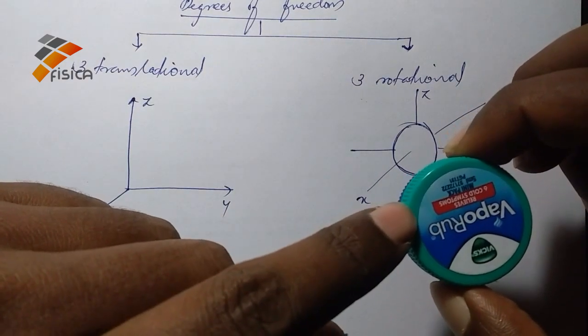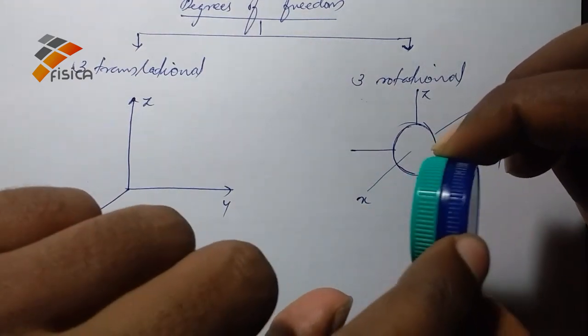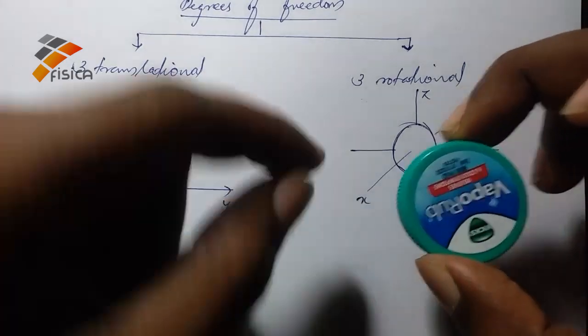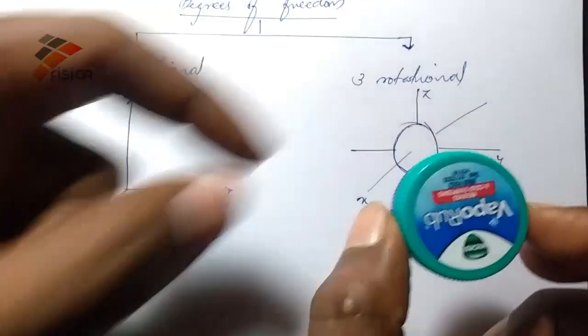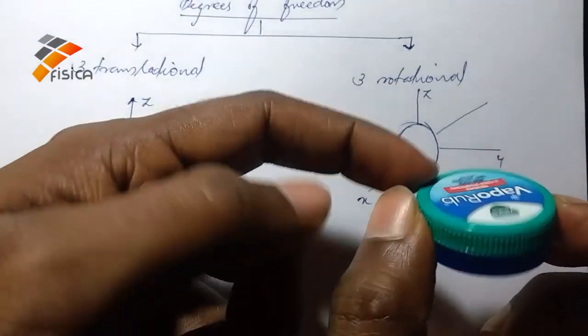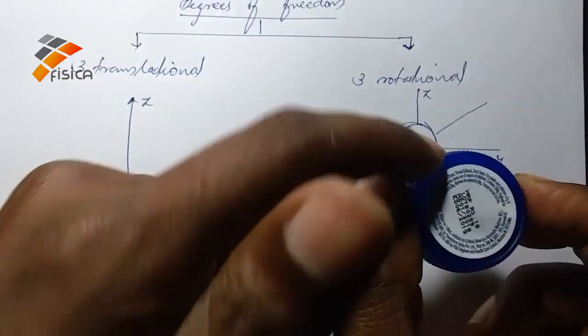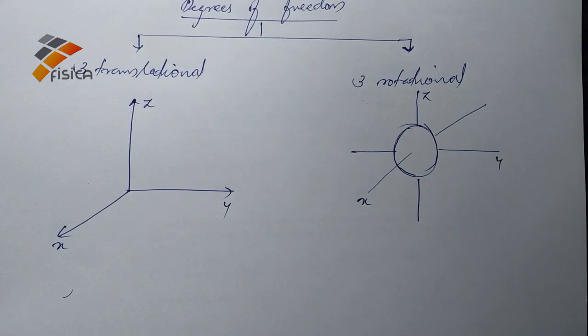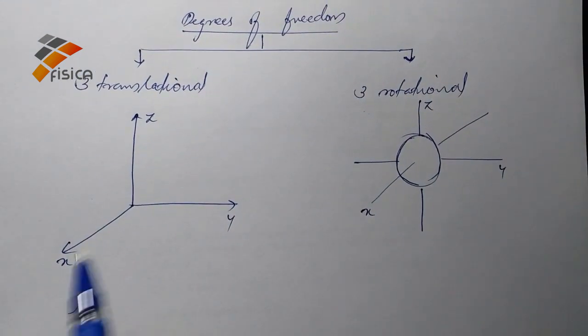You can rotate along y-axis, so you can rotate this body like this. And another degree of freedom is along the z-axis like this. So these are the degrees of freedom of a rigid body. There are three translational degrees of freedom and three rotational degrees of freedom.